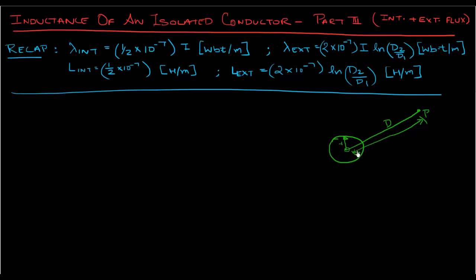What we're going to measure is the flux linkages at point P — both internal flux linkages and external flux linkages of this conductor — due to the current i flowing through it.